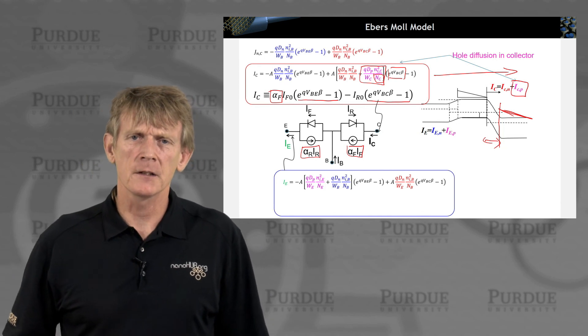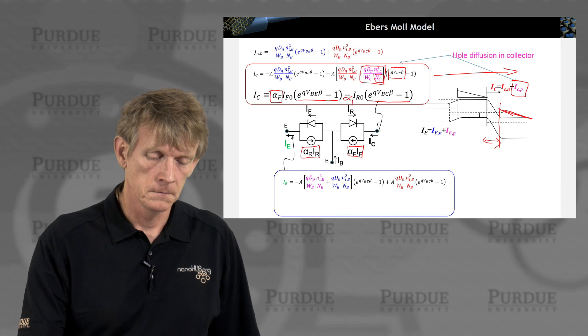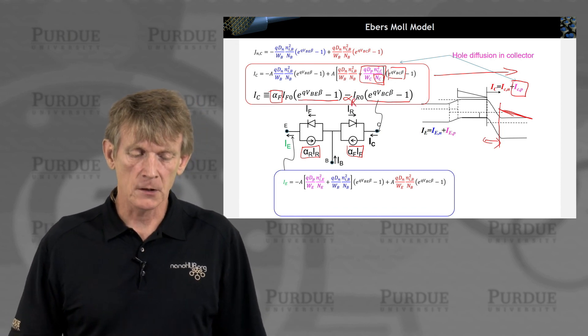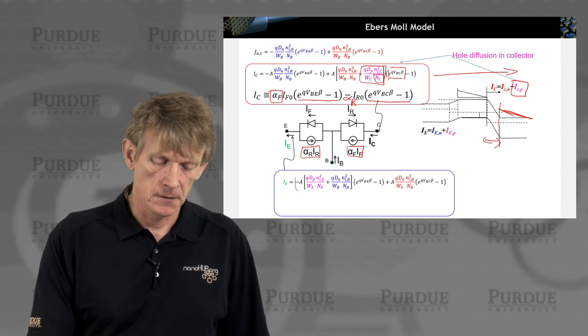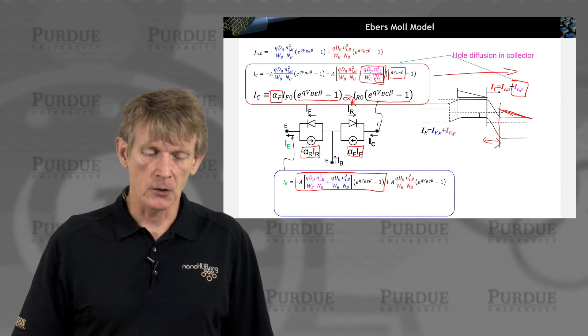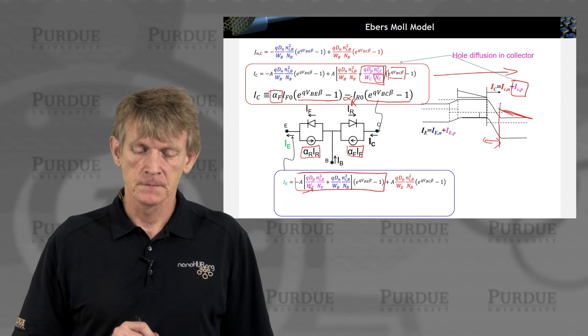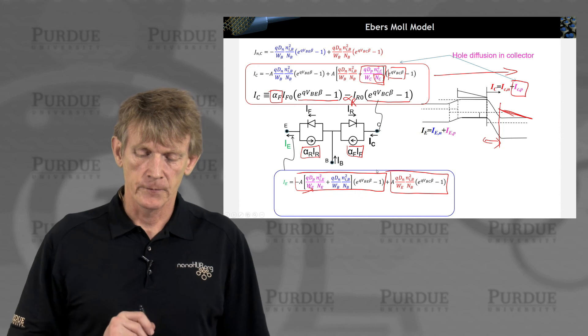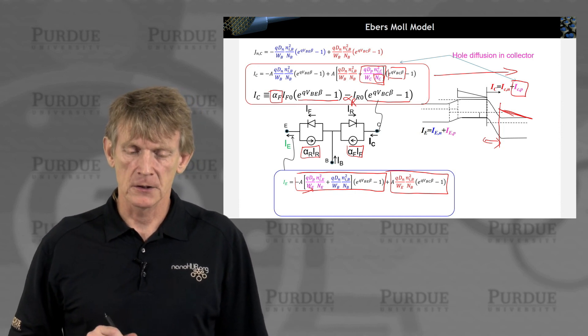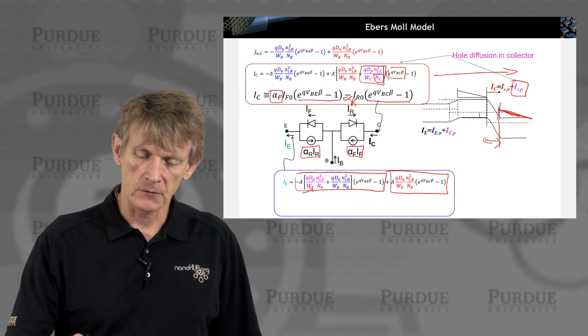Now, for the emitter current, we can write down something rather similar. We can write down for the emitter a similar expression that depends on the base emitter voltage and now also includes the emitter diffusion. And we have the term just like what we had before that depends on the base collector voltage. So we're doing the same thing as what we did here. We're also now doing it for the minority carriers on this side here. So no black magic either here.